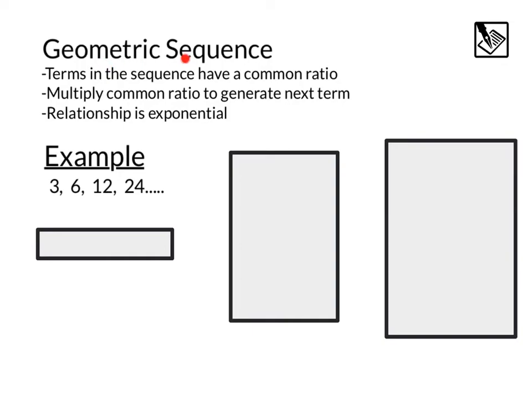In a geometric sequence, the terms in the sequence have a common ratio. And this common ratio is basically what number is multiplying to the previous term to get the next one. And this relationship is exponential.